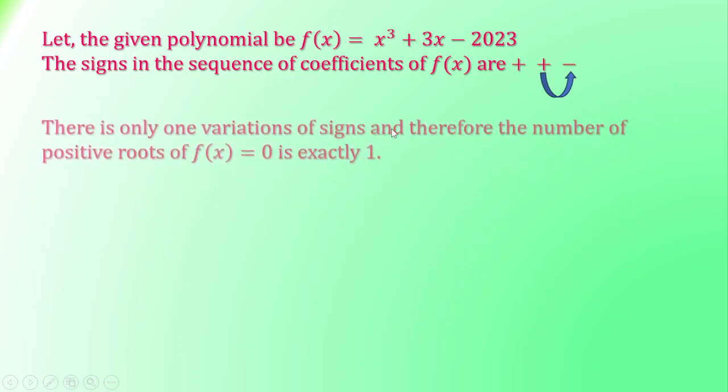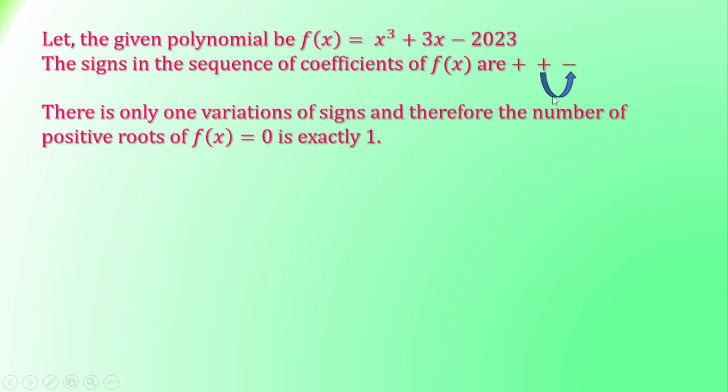You can see that here there is only one variation of signs, plus to minus. There is only one variation of signs, and therefore the number of positive roots of f(x) = 0 is exactly 1.